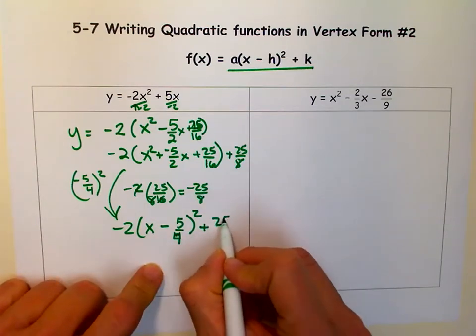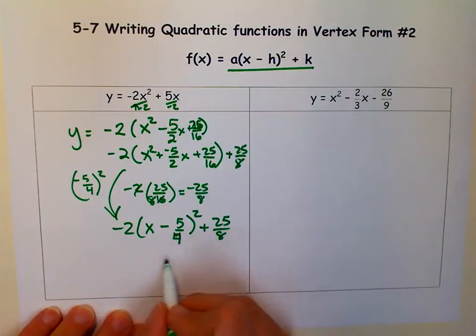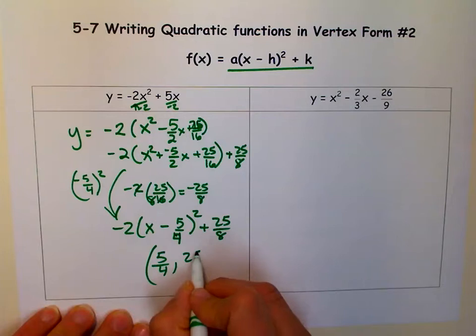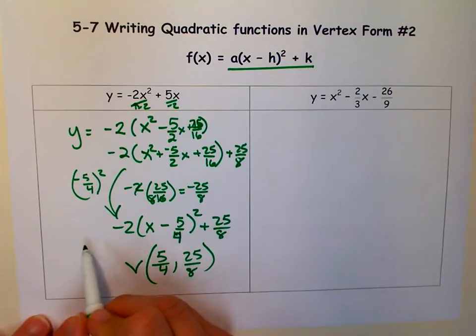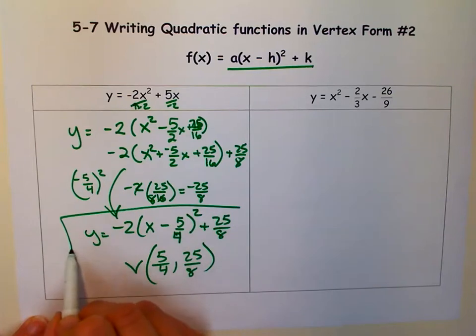And then plus 25 eighths. So if you wanted to know what your vertex is, remember you take the opposite of that h, and it's 25 over 8. So this is our vertex. But this would be our vertex form.